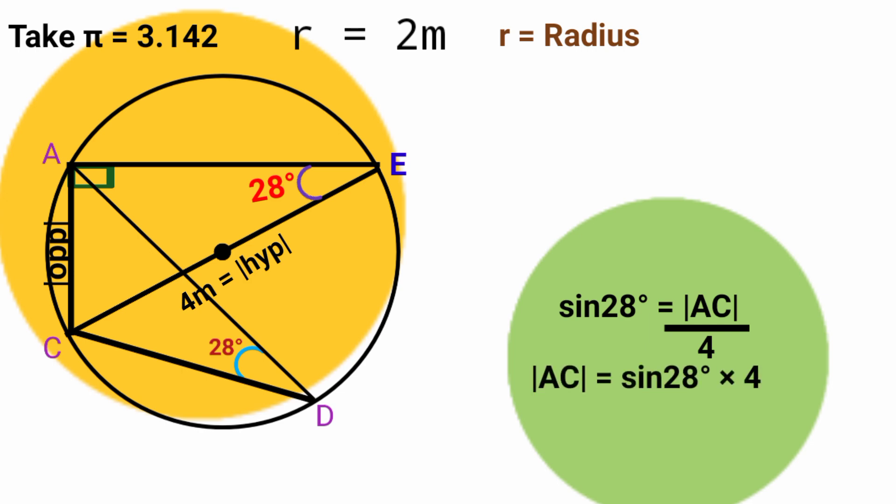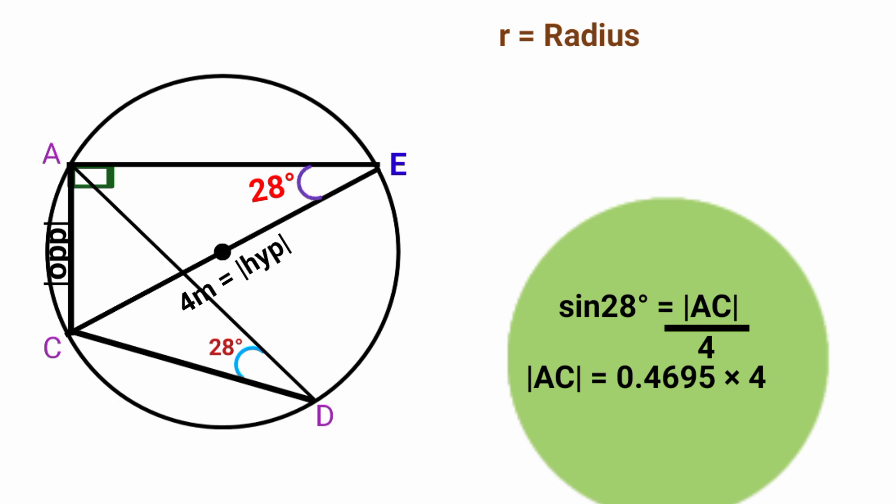Sine 28 if you press your calculator is 0.4695. Now line AC is equal to 0.4695 times 4. 0.4695 times 4 is 1.87. So now we found the length of this line to be 1.87 meters. Thank you.